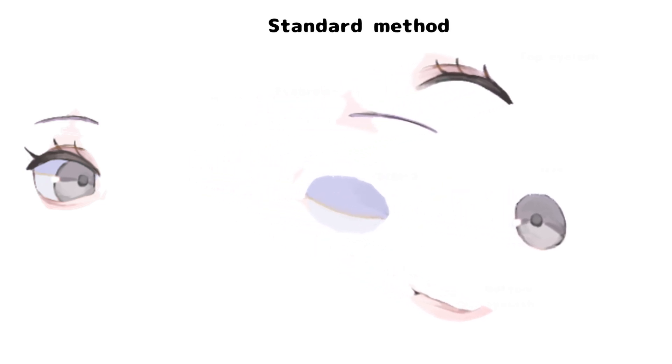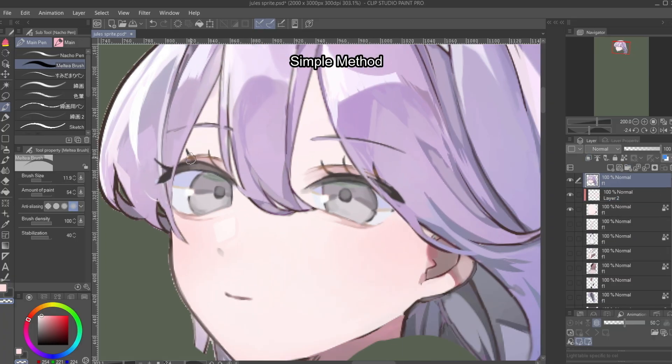And then here we have the standard method, which is the sclera, the iris, upper and lower lashes, and the eyebrows — both of these separated into left eye and right eye versions.